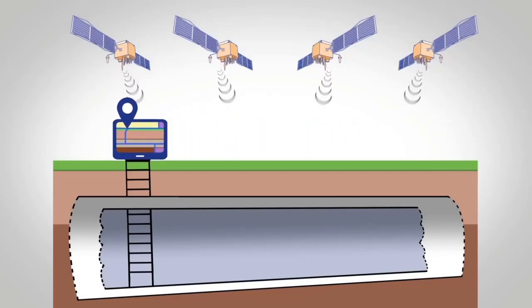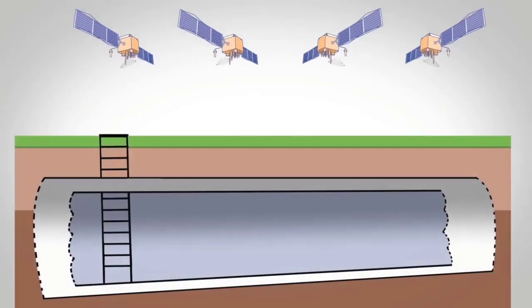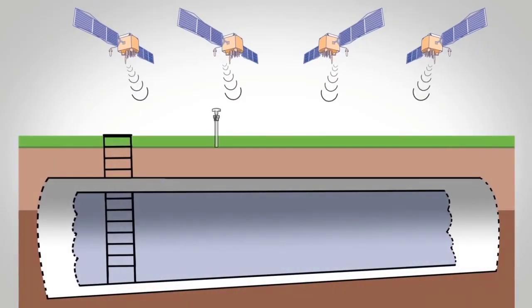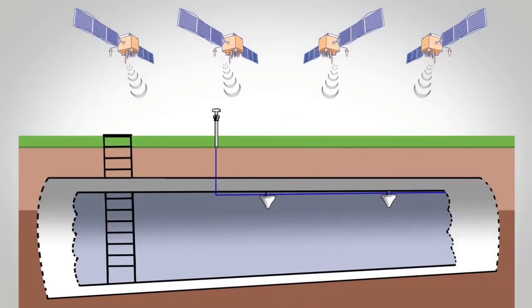But GPS signals are weak. They cannot penetrate buildings or subterranean locations. The first thought to solve this problem is to use a GPS repeater system to collect the signal from the live sky, conduct it through specialized low-loss RF cabling,